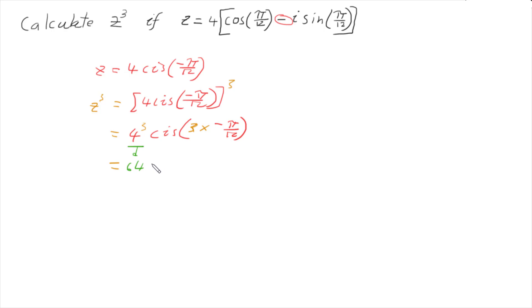And then I've got cis 3 times negative pi over 12 is going to be negative pi over 4.